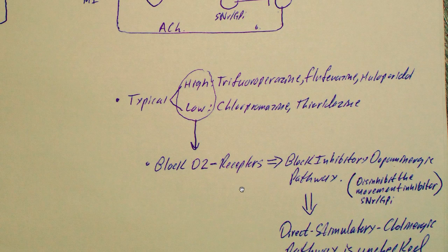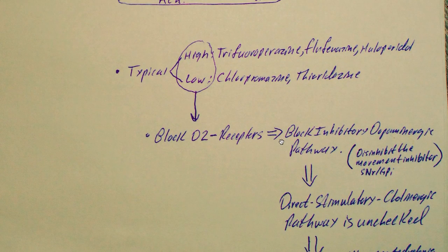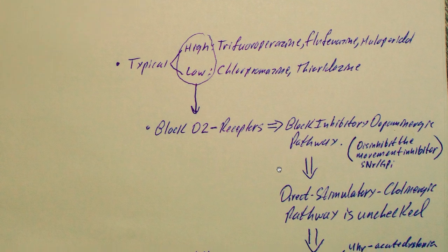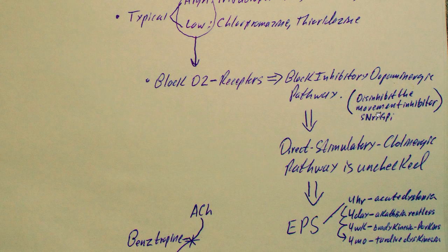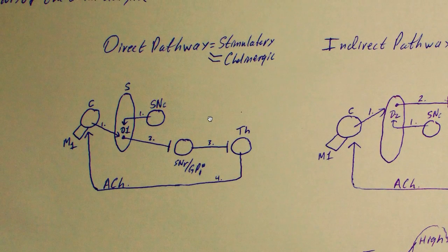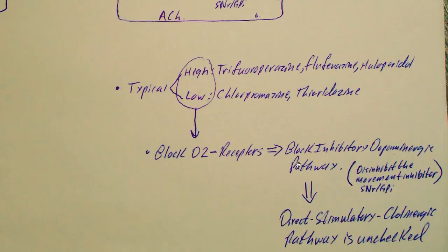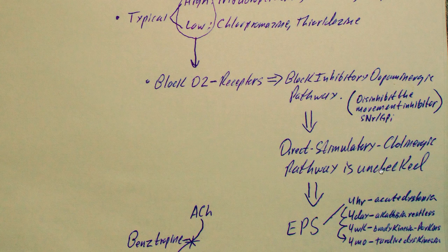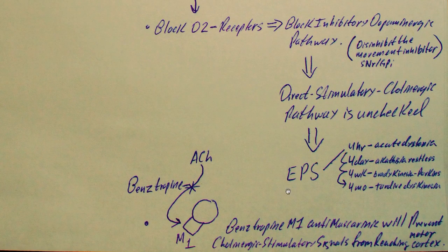When they block those D2 receptors, they block the inhibitory dopaminergic pathway, or they disinhibit the movement inhibitor, which is the SNR GPI. What that leads to is the direct stimulatory cholinergic pathway, the one that stimulates movement, that pathway is unchecked, leading to extrapyramidal symptoms.